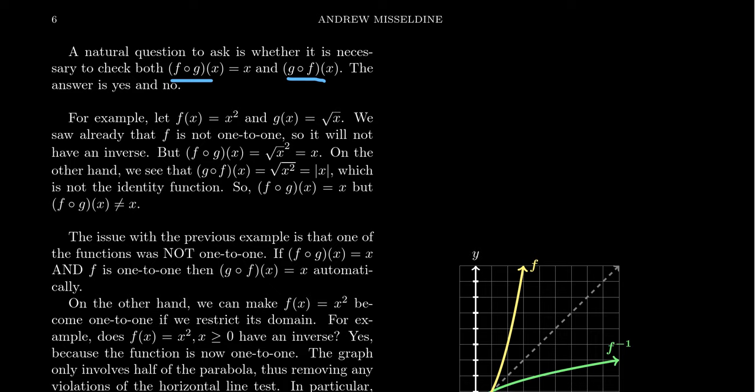So potentially, if you have two functions, f and g, if you compose f with g and g with f, the order of operations does depend on the functions. We've seen many examples where f composed with g is not the same thing as g composed with f.